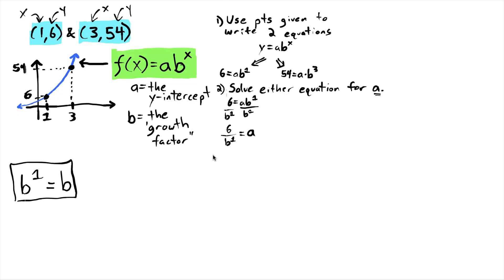Now I'm ready for my third step, which is to substitute into the other equation. The other equation in this case is the other of the two that I made in step one. And so earlier I found out that a equals 6 over b, and here's a right here. The a in these two equations has the same value. I don't know it yet, but it's the same. So I'm going to take this equation and instead of writing a, I'm going to substitute 6 over b to the first.